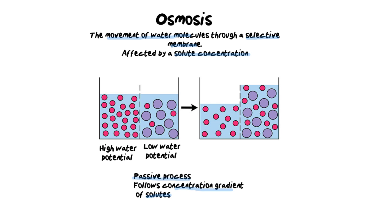There is a lot of terminology associated with osmosis. Looking at our diagram, we have a beaker of water with a selectively permeable membrane down the middle. On one side we have a high water potential, represented by the smaller pink dots. On the other side there is a lower water potential because the purple dots represent solutes. The solutes are too big to move through the membrane, so water does all the moving via osmosis.